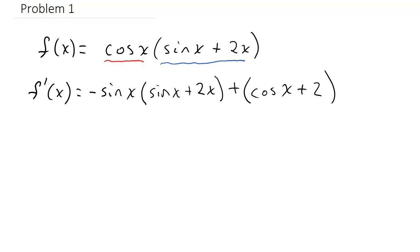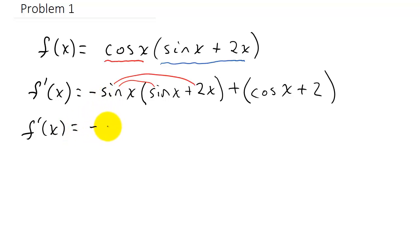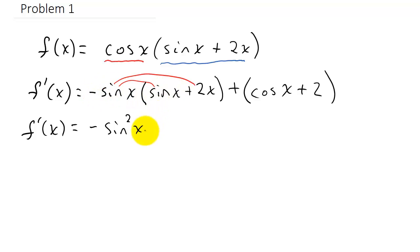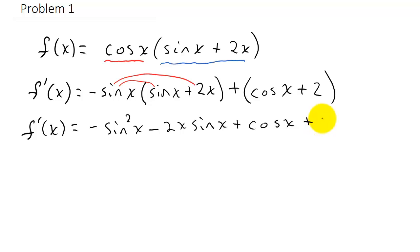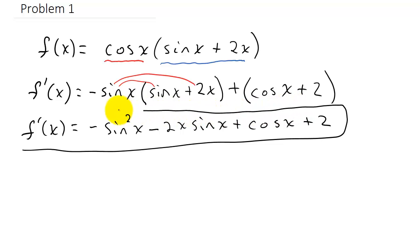Now let's simplify this a little bit. I can distribute negative sine x, so f prime equals negative sine squared x minus 2x sine x, plus — removing the parentheses since we're just distributing a 1 — cosine x plus 2. We can leave our answer like this.